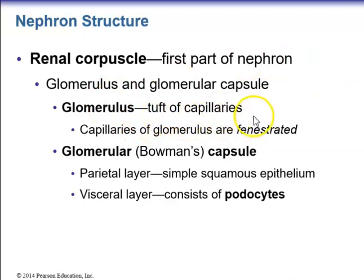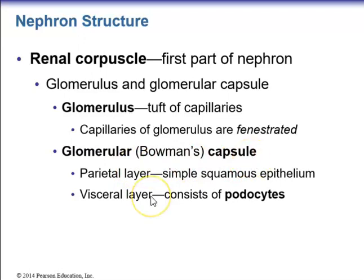The glomerulus is a tuft of fenestrated capillaries — they have holes which allow for filtration. The second structure within the renal corpuscle is the glomerular or Bowman's capsule, which has two layers. The outer parietal layer is made up of simple squamous epithelium. The inner visceral layer adheres to the glomerulus and consists of specialized cells called podocytes, which have foot processes and participate in the filtration membrane.